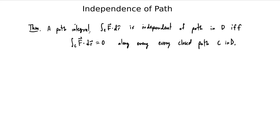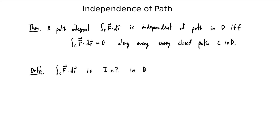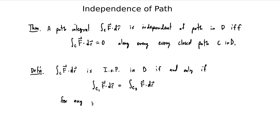We should start by reviewing the definition of independence of path. Whenever you use a definition as part of a theorem you have to remember what that definition means — usually it's very important to actually proving the theorem. The definition is that the path integral of f dot dr is independent of path in d if and only if the integral along c1 of f dot dr equals the integral along c2 of f dot dr, for any paths c1 and c2 that are contained in d and have the same initial and terminal points.